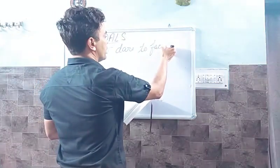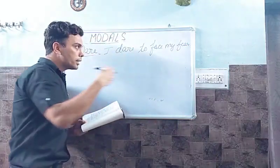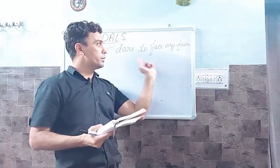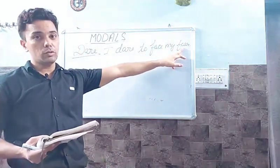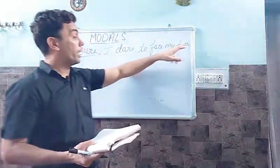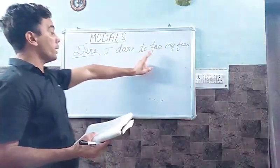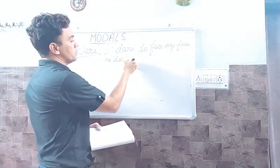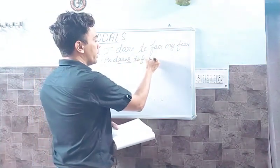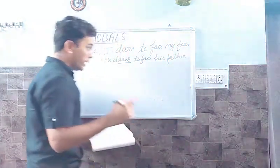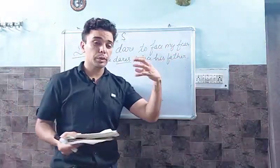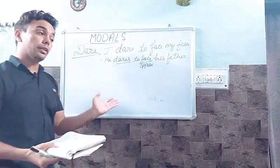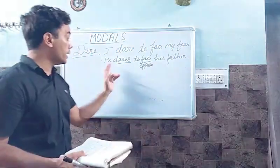Let's see examples of 'dare' as main verb. 'I dare to face my fear' — here 'dare' is the main verb and 'to face' is the infinitive. In past tense: 'I dared to face my fear.' In singular form: 'He dares to face his father' — when he is opposing his father on something. 'He dares to oppose his father,' 'He dares to go out at night.'